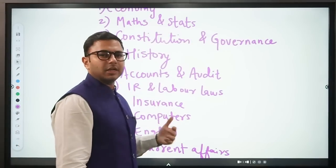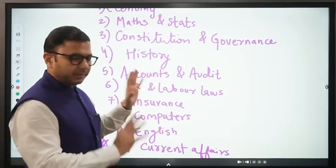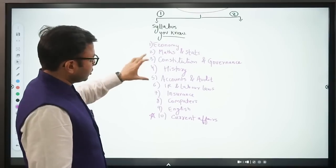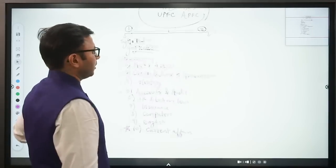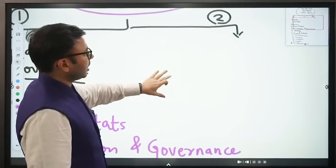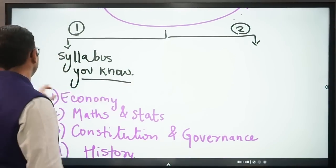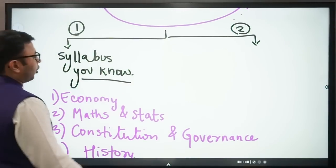Some people are telling it in 11, some people are telling it in 13. I will tell it a little compressed so that it becomes easier for you to remember it. So these are 10 subjects that you have to cover. Now, let's come to the second part, which is about syllabus that you ought to know. Not the syllabus that you know, but the syllabus that you ought to know.